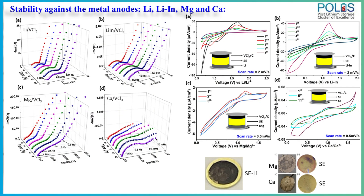We used four anodes and performed electrochemical studies including time-monitored impedance spectroscopy and cyclic voltammetry with these metal anodes and a vanadium halide-based cathode material. We observed different trends in the temporal evolution of resistance features. In all cases, over a waiting time of 0 to 10 hours, we saw an increase in impedance at the interface, indicating interfacial reactions between the electrolyte and the anodes. In the case of calcium, the impedance is high, as is the case for magnesium, compared to lithium and lithium-indium.